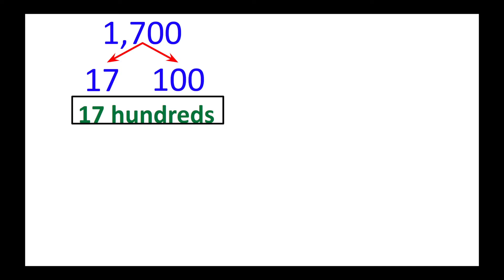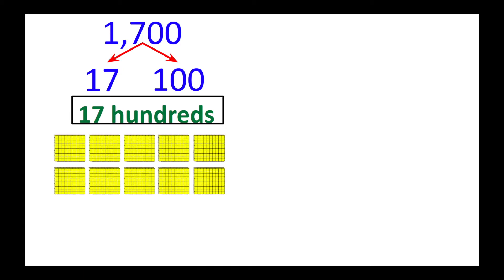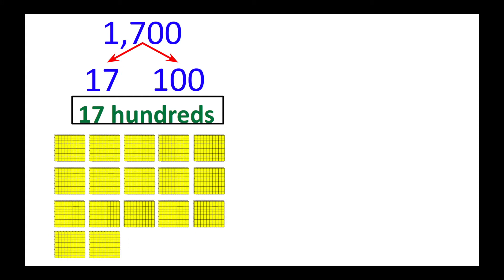Think about it like when you learned place value back in second grade with place value blocks. If I were to create 1,700 with those blocks, I would need 17 hundreds. When we get to 10 hundreds, that creates 1,000. So just two rows are 1,000, and then I've got another 500, 1,500, 1,600, 1,700. You can see through the illustration here that 17 hundreds does, in fact, make 1,700. We're just reading it differently.